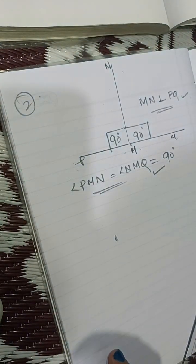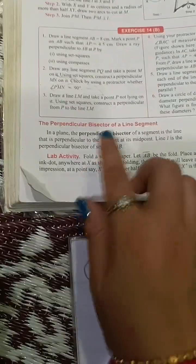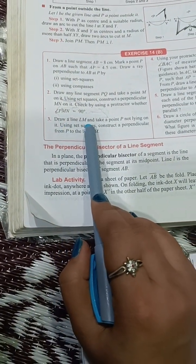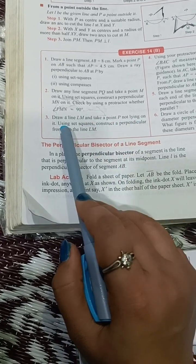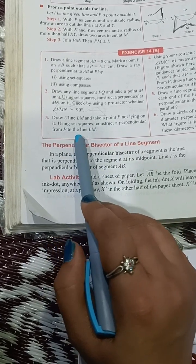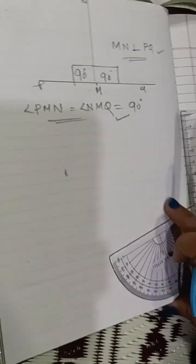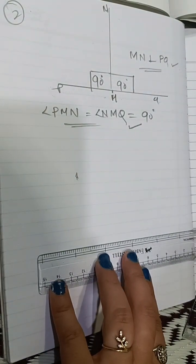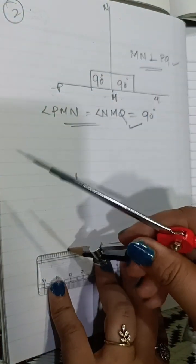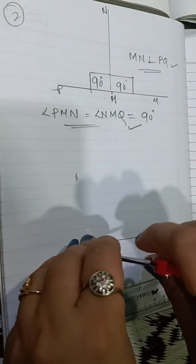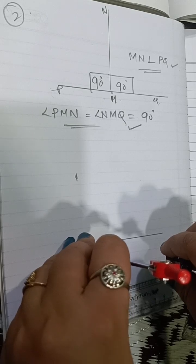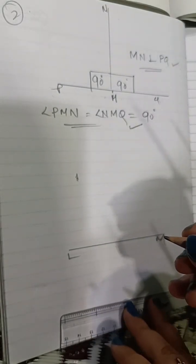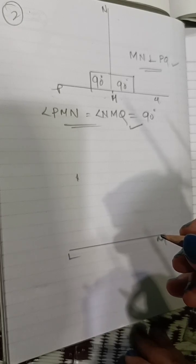Now question number three: Draw a line LM and take a point P not lying on it. Using a set square, construct a perpendicular from P to the line LM. First draw the line LM, then take point P not lying on it, and construct a perpendicular from P to line LM.